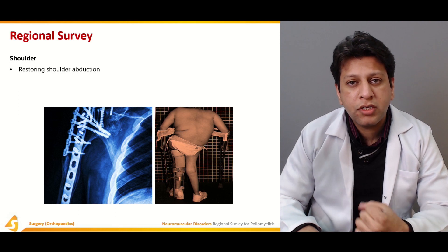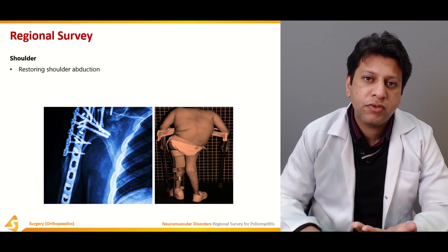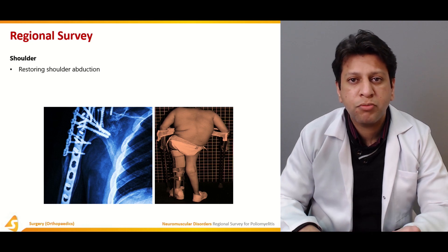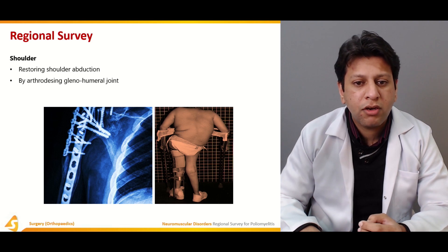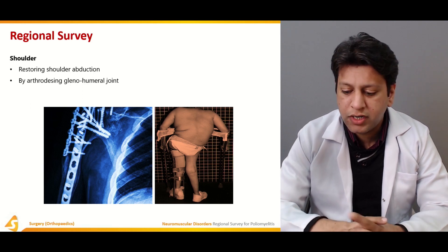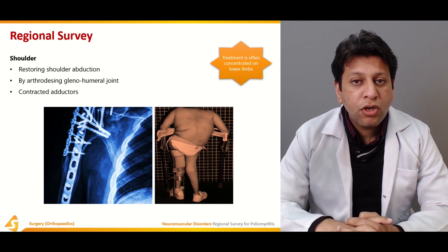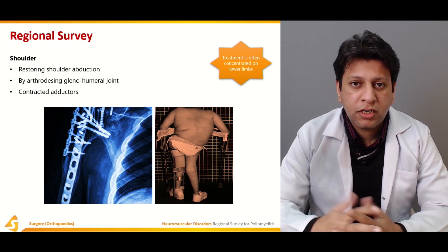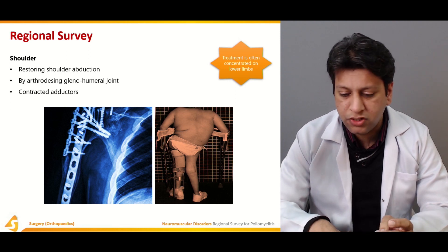At the shoulder, the most important thing is restoring shoulder abduction. If the deltoid is functioning properly, that is ideal, but if not, we may have to transfer a tendon for shoulder abduction. If that is not possible and other shoulder girdle muscles are also paralyzed, the next option is shoulder arthrodesis — arthrodesing the glenohumeral joint is probably more effective. Treatment is often concentrated on the lower limbs, but for the upper limb we mainly resort to arthrodesis of the shoulder, elbow, and wrist joint.